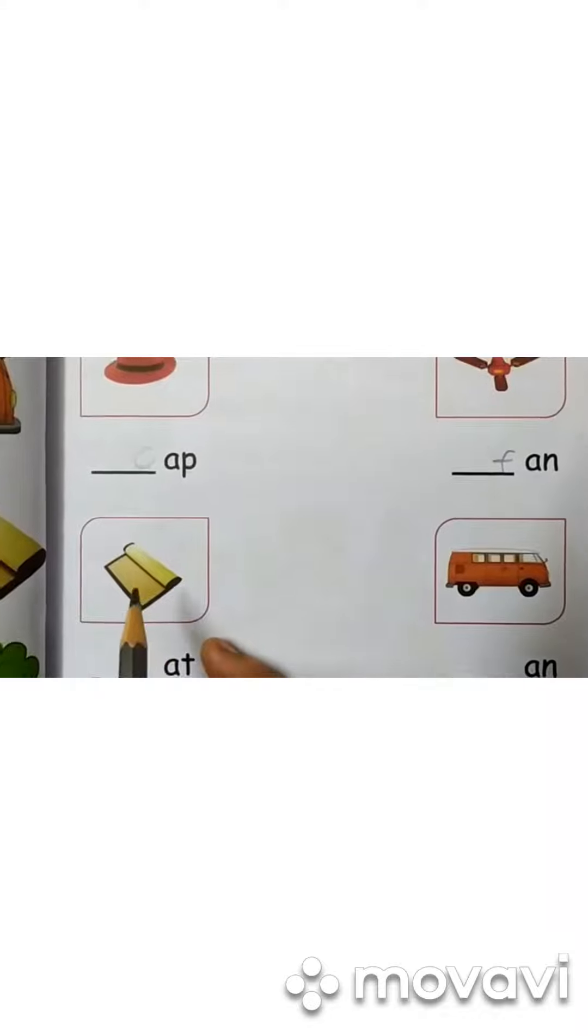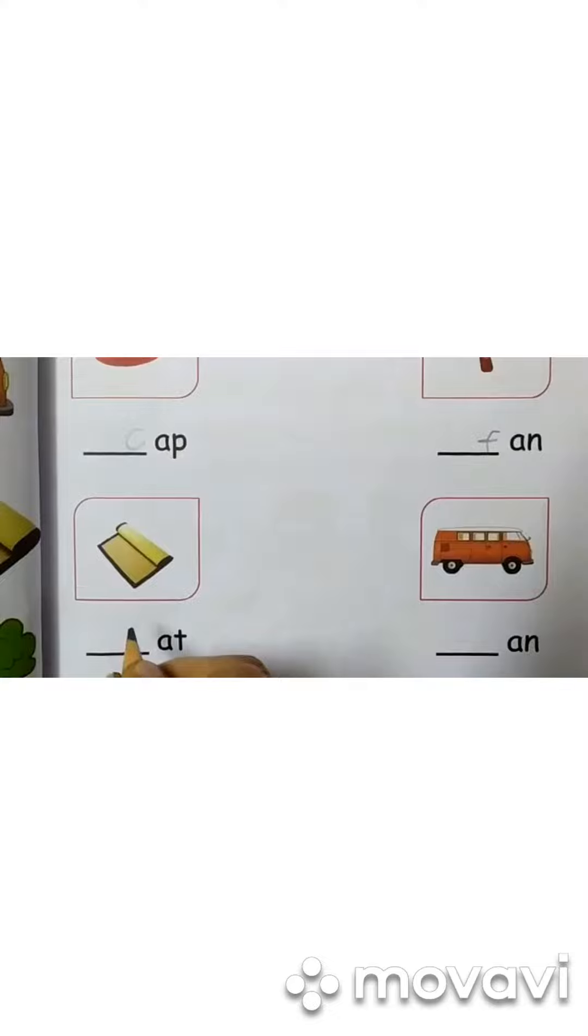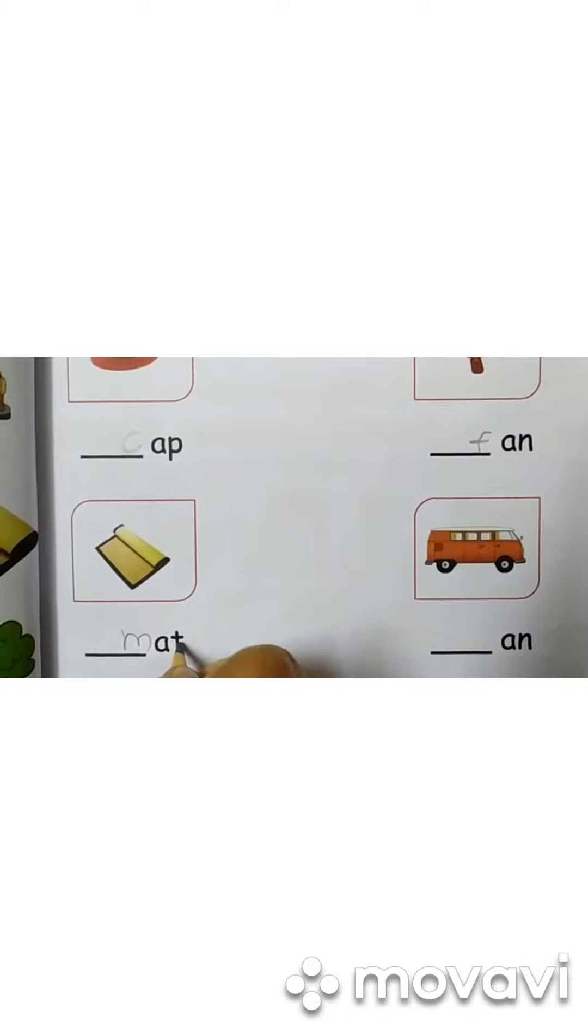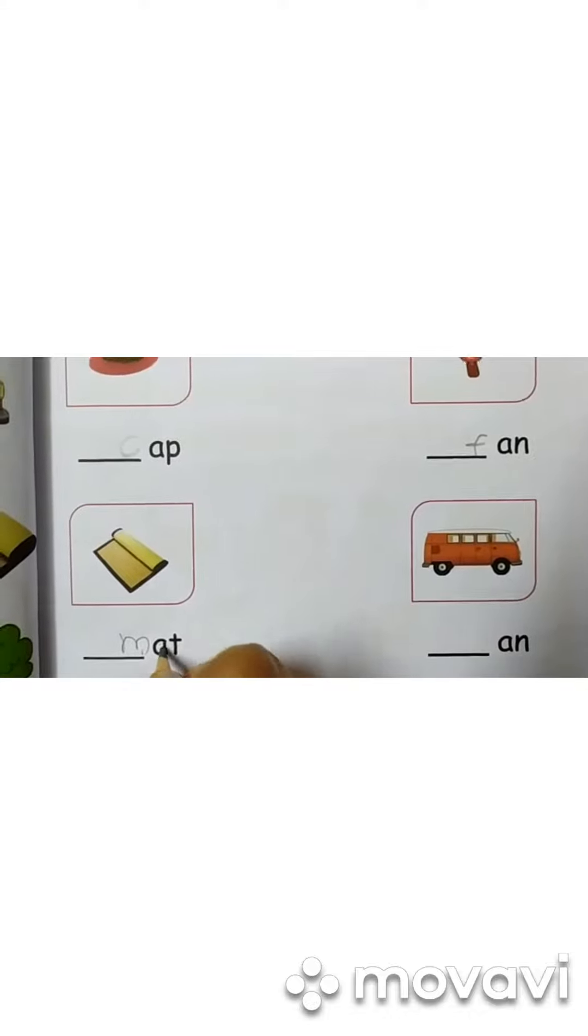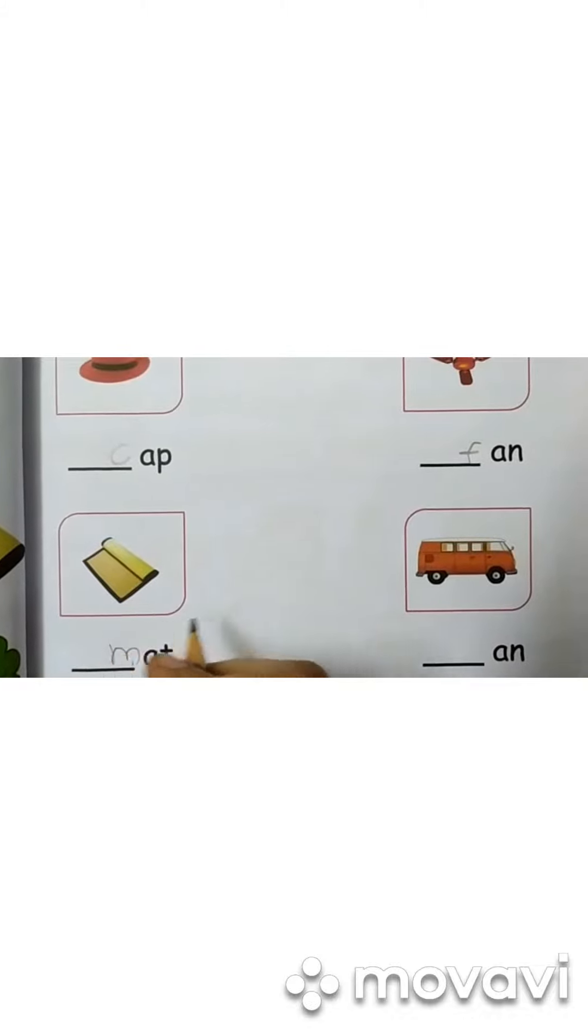Now see here. What is this? This is mat. So write here. M-A-T. M-A-T. Mat. Okay? This is mat.